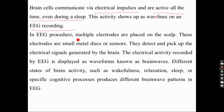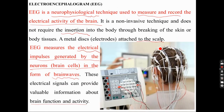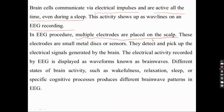In the EEG procedure, multiple electrodes are placed on the scalp in specific regions. These electrodes are small metal discs or sensors that detect and pick up the electrical signals generated by the brain. This electrical activity recorded by EEG is displayed as a waveform known as brain waves.